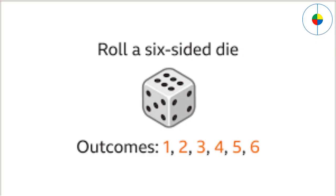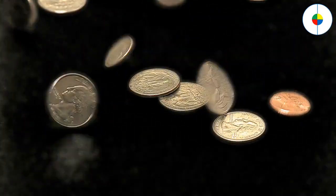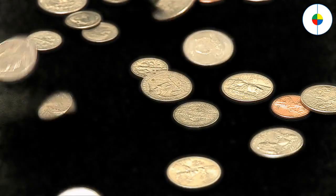An event is any outcome, or group of outcomes. When we flip a coin, both outcomes are equally likely to occur, and this feature is called random.